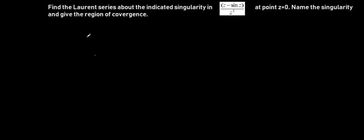In this video we are to find the Laurent series about the indicated singularity of the function (z minus sine z) divided by z raised to the power of 3, at the point z equal to zero. We are told to name the singularity and give the region of convergence.